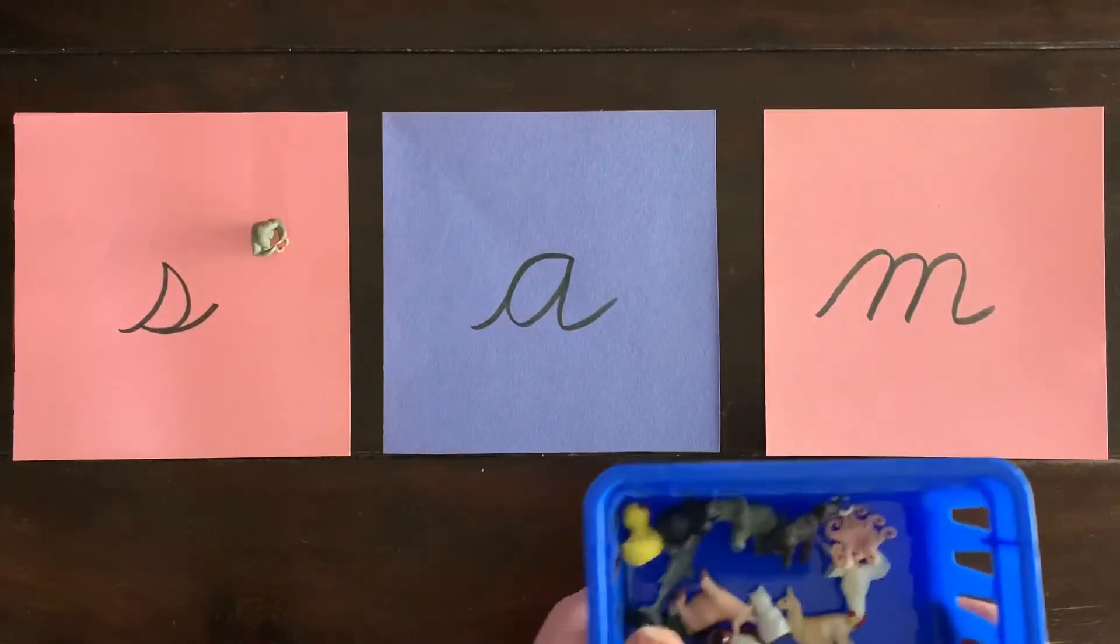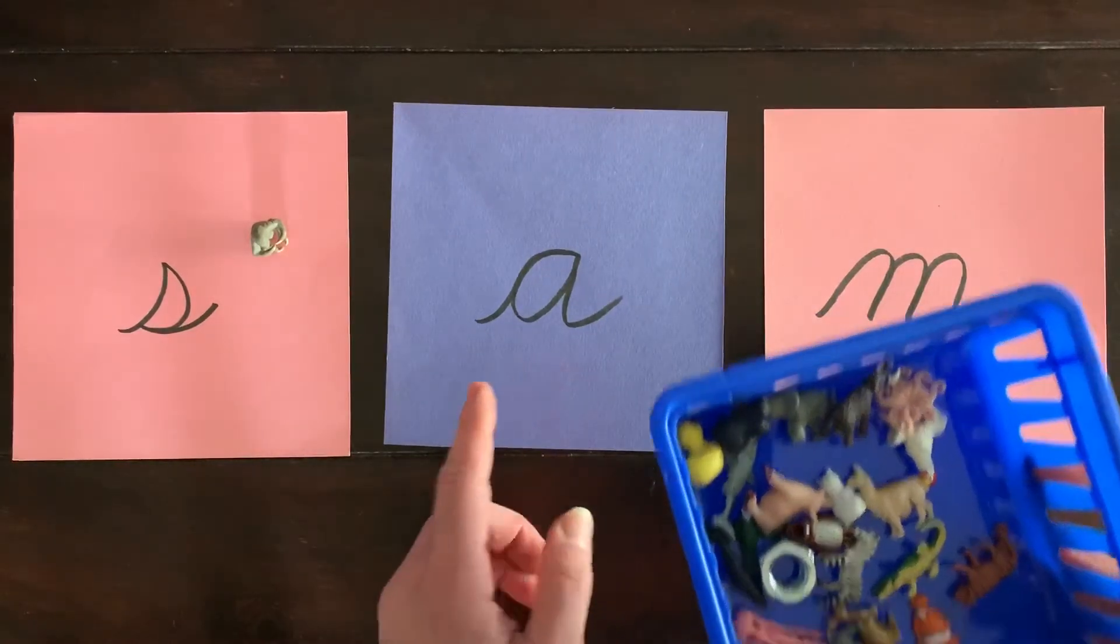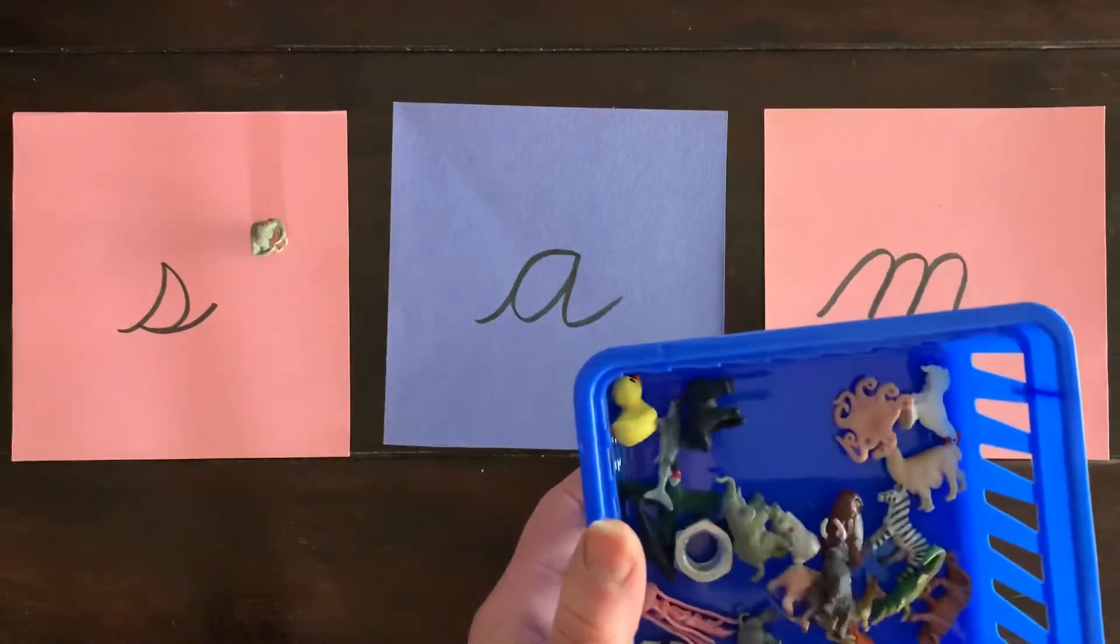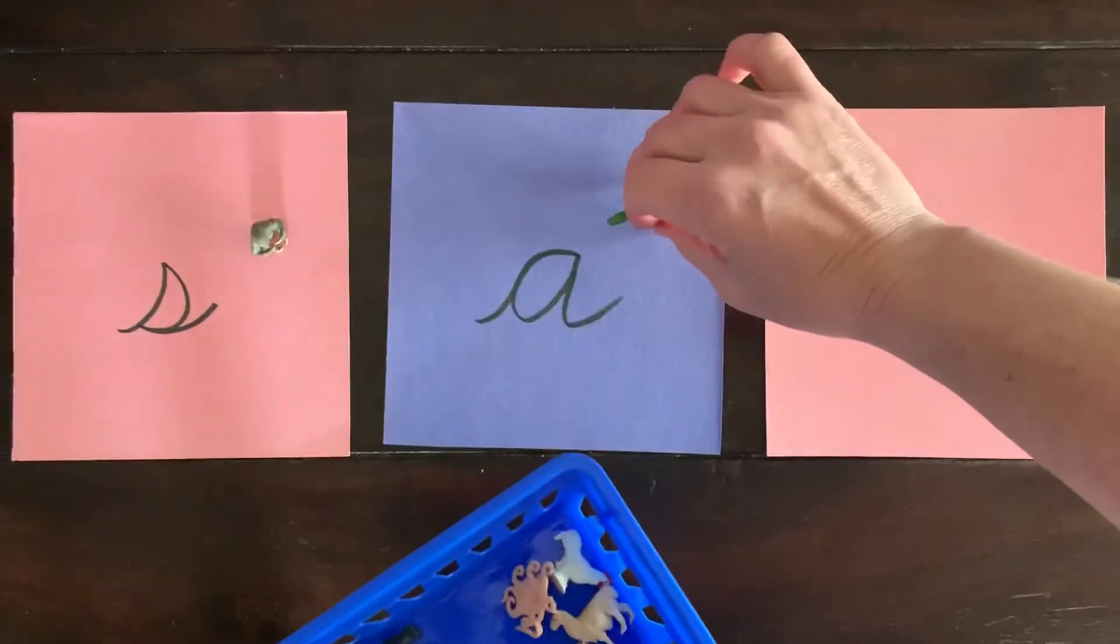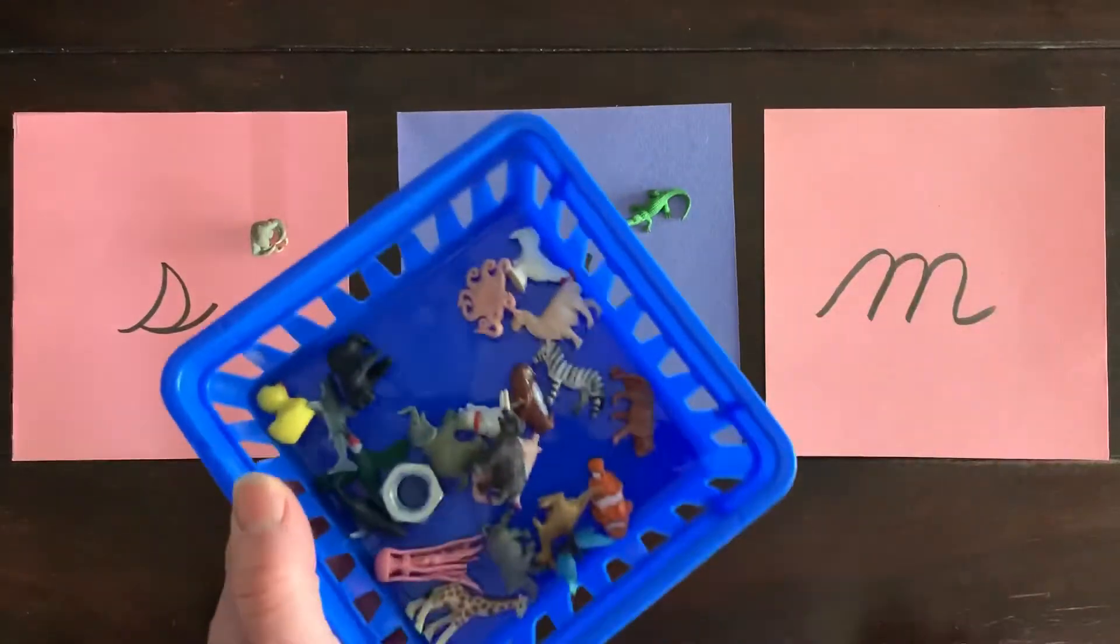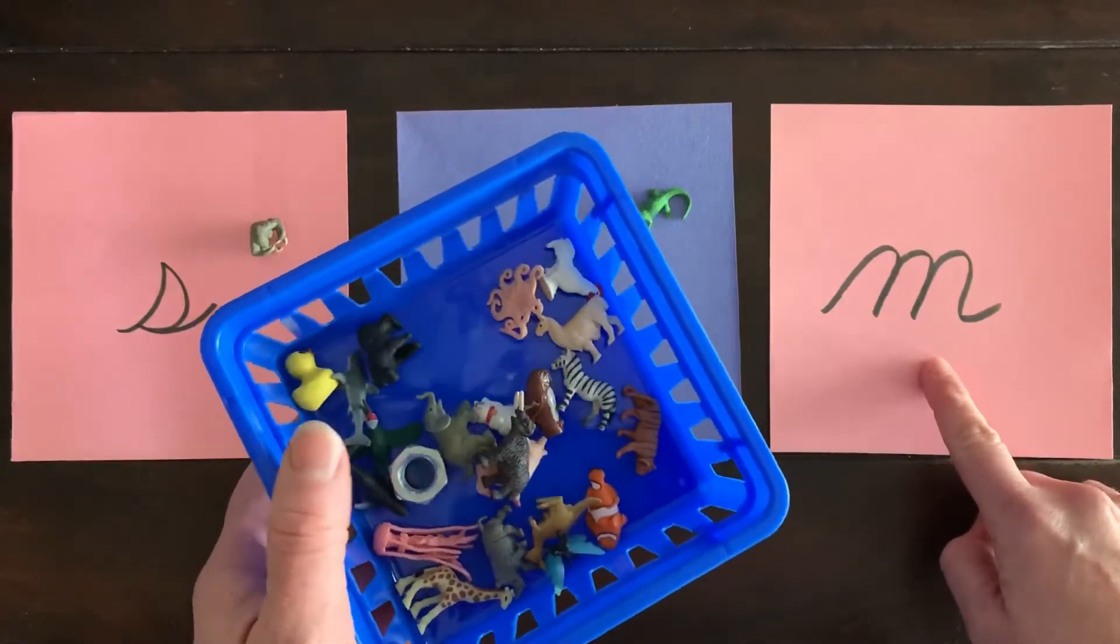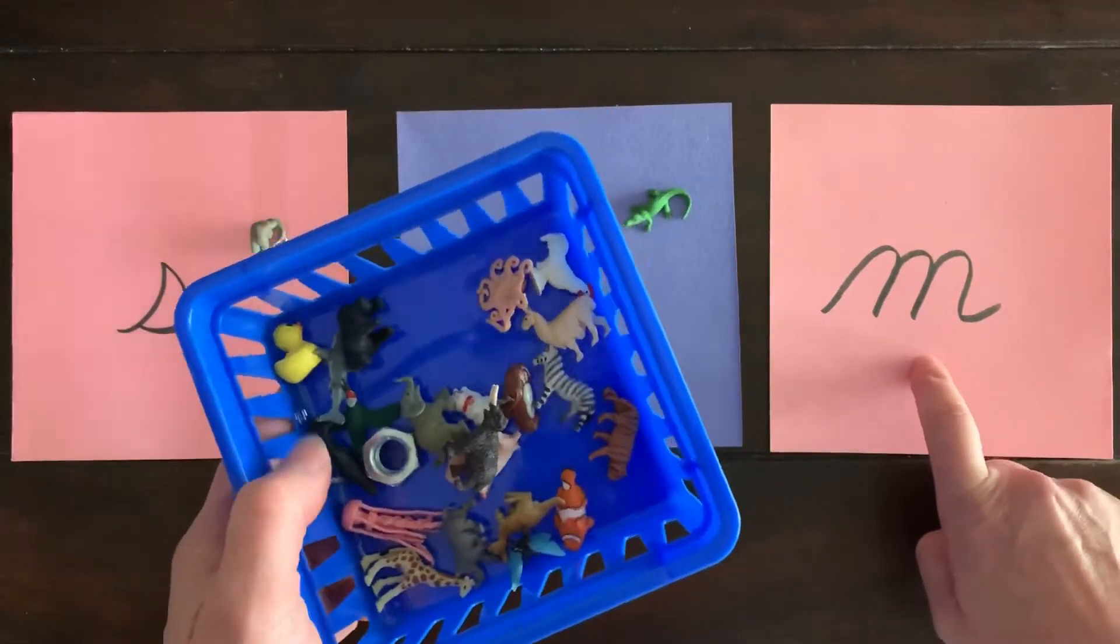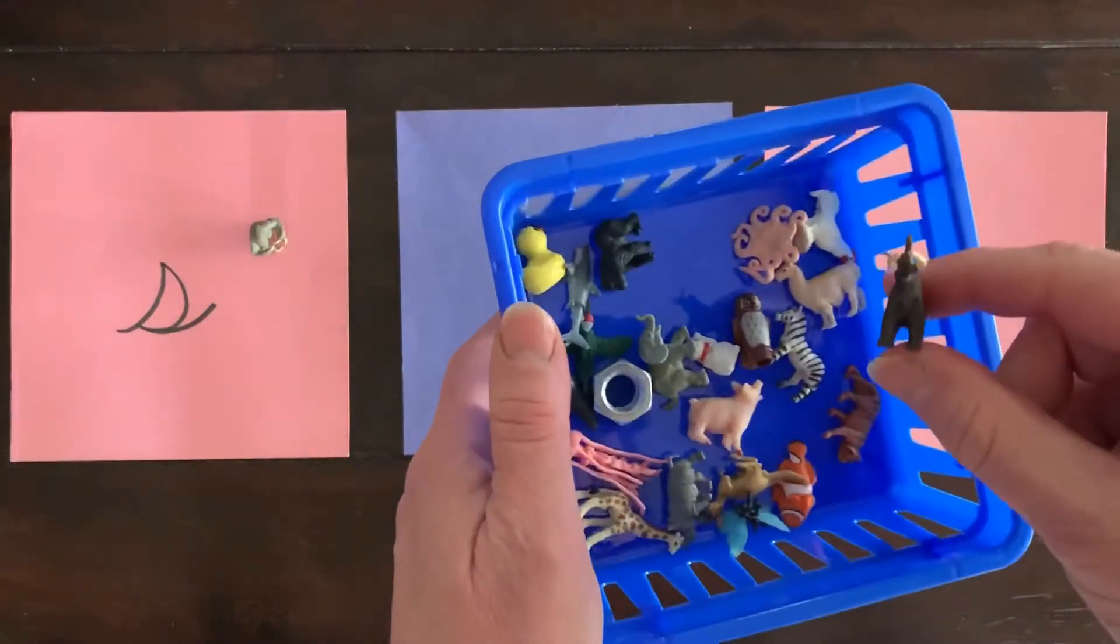Can you help me find the object in the basket that begins with 'a'? Again having them look through... alligator. Can you help me find the object in the basket that begins with this sandpaper letter? See if they can recognize it. It's a fun way of shifting the game around. Mmm... mammoth.